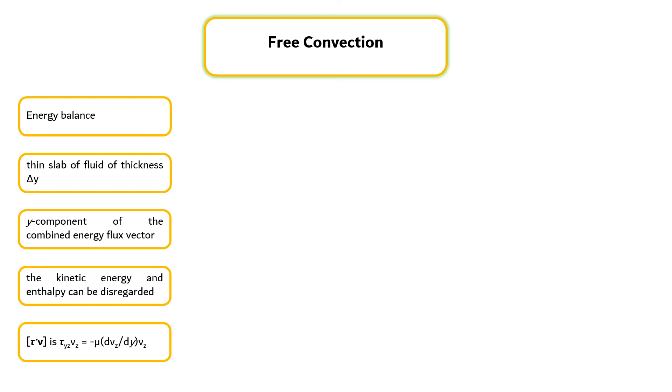The Y component of the term tau V would lead to the viscous heating contribution. However, in the very slow flows encountered in free convection, this term will be extremely small and can be neglected. The energy balance then leads to equation 10-24 for constant K. The temperature equation is to be solved with the following boundary conditions and the solution is given by equation 10-25.